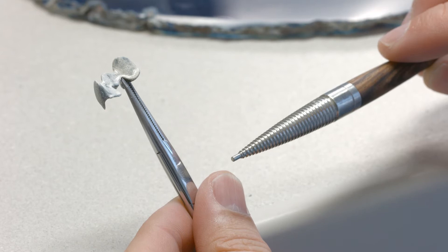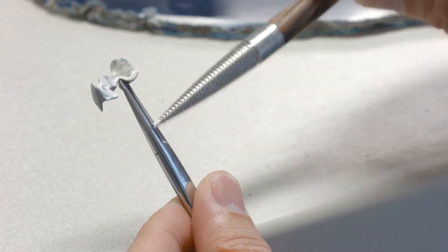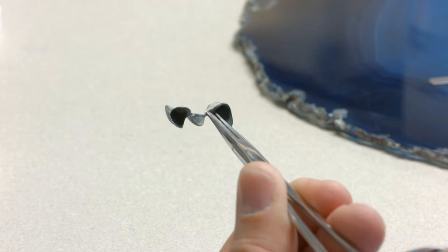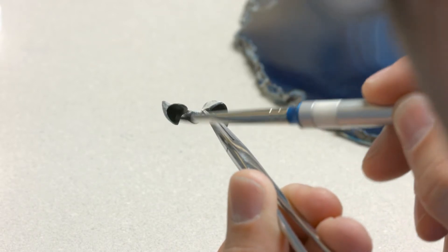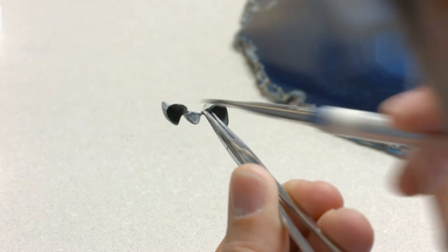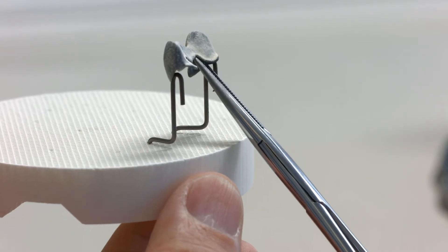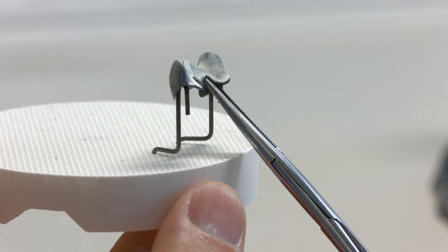This will help to achieve a sound bonding layer between the metal and all the following ceramic layers. It's important to ensure that excess opaquer does not reach the inner aspects of crowns since this may lead to inaccuracies of fit.